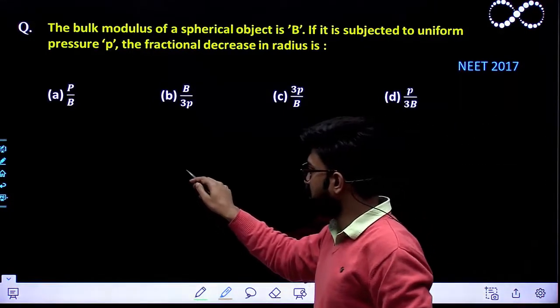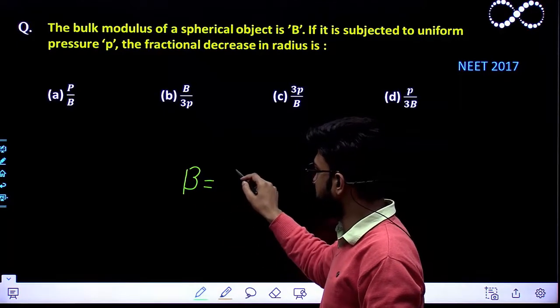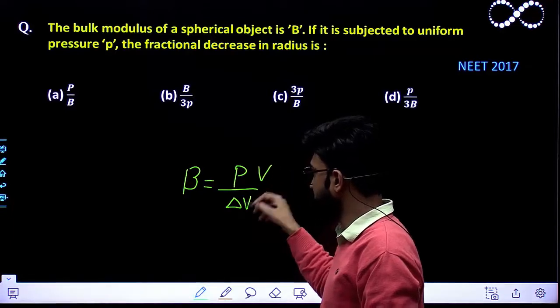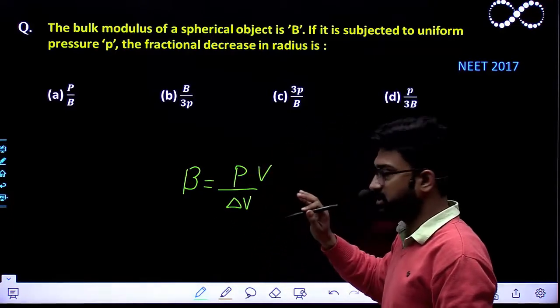We know that this bulk modulus is given by the relationship: bulk modulus is nothing but pressure divided by del V by V, which is change in volume divided by original volume.